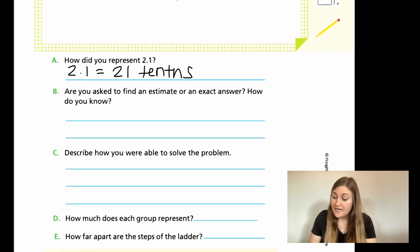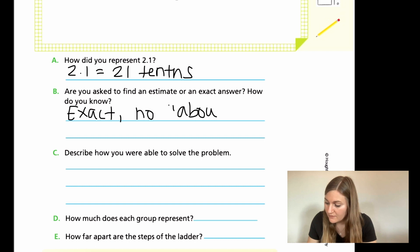So for B, are you asked to find an estimate or the exact answer? There is no about or roughly, right? So we are finding the exact answer. And we know that there's no about or roughly or anything like that.